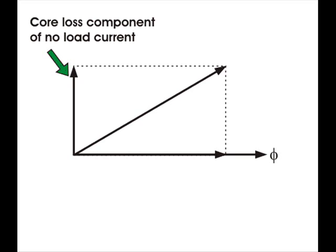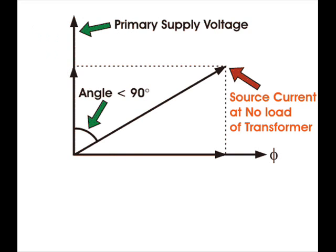Because of this core loss component, the source current in the transformer on no load condition is not exactly at 90 degrees lag of supply voltage, but it lags behind an angle less than 90 degrees.